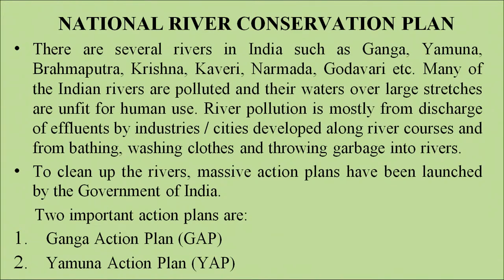National river conservation plans. There are several rivers in India such as Ganga, Yamuna, Brahmaputra, Krishna, Kaveri, Narmada, and Godavari. Many of these rivers are polluted and their water over large stretches is unfit for human use. River pollution is mostly from discharge of effluents by industries or cities along the river course, and from bathing, washing clothes and throwing garbage into it. To clean up the rivers, massive action plans have been launched. We will be discussing two: the Ganga Action Plan and the Yamuna Action Plan.